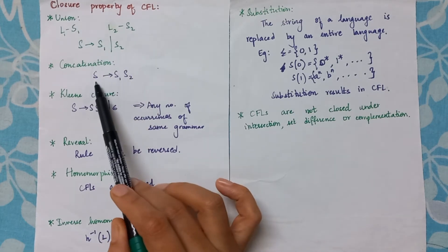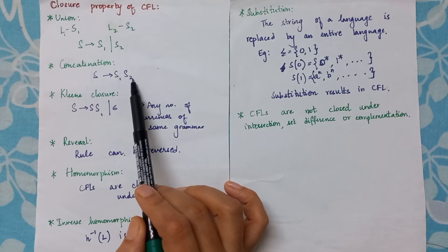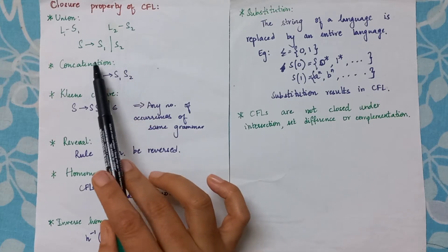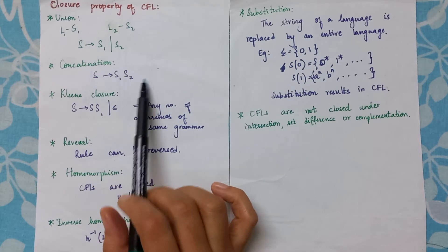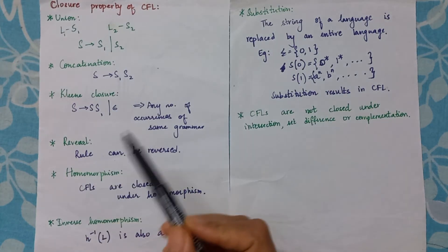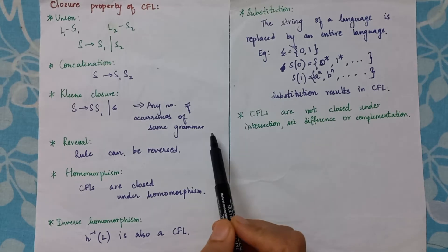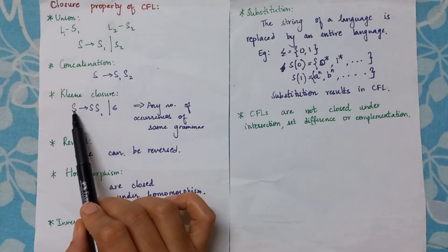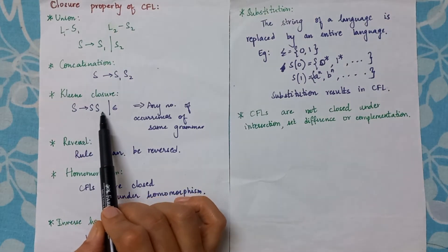For concatenation it will be s gives s1 s2, so CFLs are also closed under concatenation. For Kleene closure, to allow multiple occurrences of the same grammar, I will say s gives s s1 where s1 is for language 1 or epsilon.